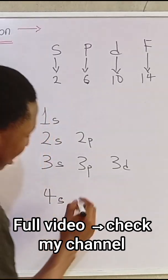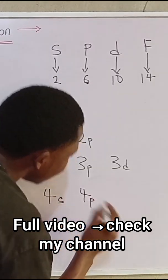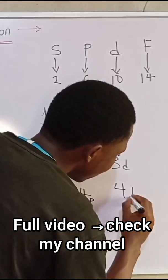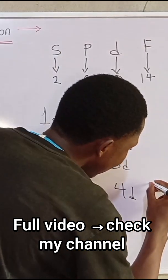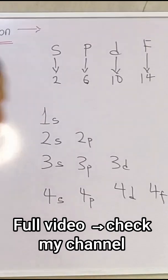Okay, now the fourth energy level has S orbital, has P orbital, has D orbital, and has F orbitals.